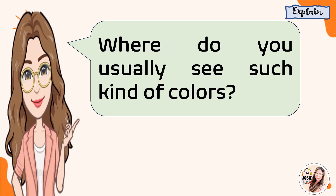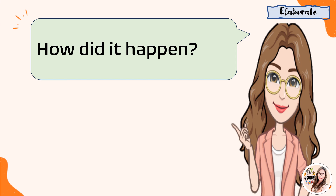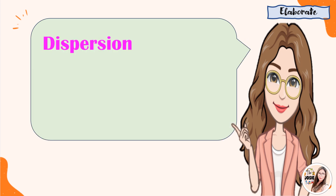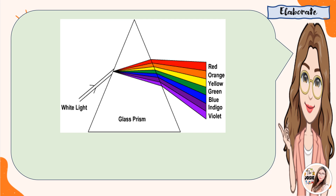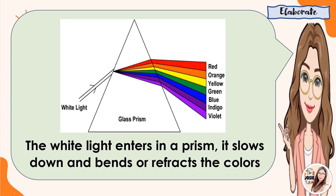Where do you usually see such kinds of colors? The colors of the rainbow and all the other colors that we see around us are colors that come from the light of the sun. A rainbow is formed when the light from the sun passes through raindrops. That is why we see a rainbow after it has rained. A rainbow is the result of sunlight breaking into different colors. We call it dispersion. As you can see in this illustration, the white light enters a prism. It slows down and bends, or refracts, the colors.